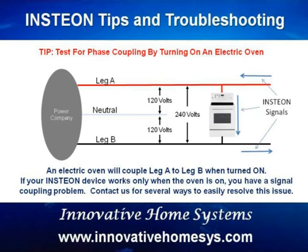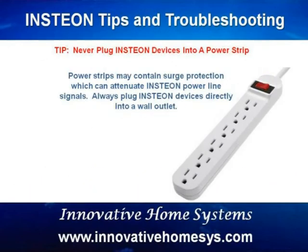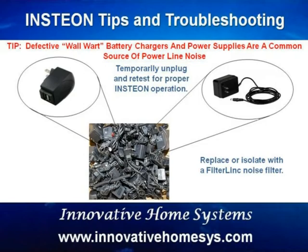If you're still having communications problems with the oven on, you may still have other attenuation or noise problems. Some common electrical devices have been known to cause power line noise and attenuation. Check to see that none of your Insteon devices are plugged into power strips — some power strips include surge protection, which can create attenuation problems. Other common sources of problems are the little wall transformers used as battery chargers for smartphones and other mobile computing devices, or as power supplies for cable modems or other audio-video hardware. Unplug every one of them and retest Insteon communications. If it starts working, plug the transformers in one at a time, testing before plugging in the next until the defective transformer is found. Once found, replace it or use an Insteon filter link to isolate it from the power line.